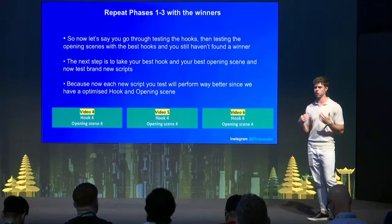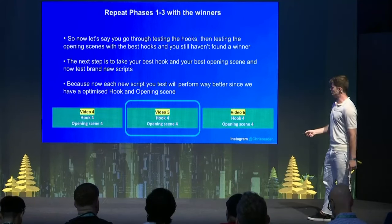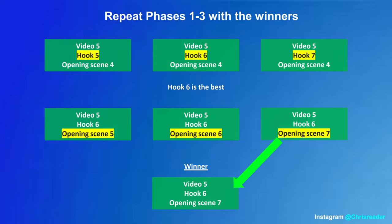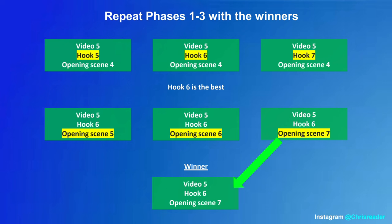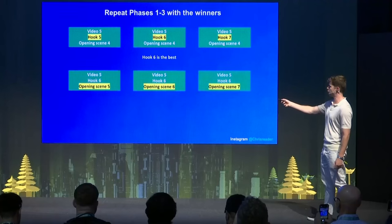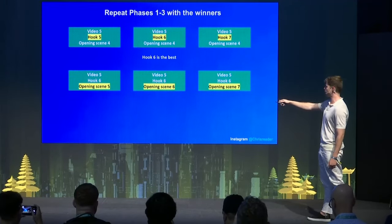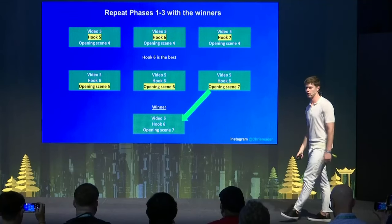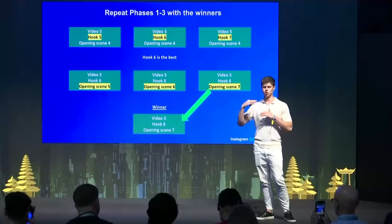Let's say video five, hook four, and opening scene four is performing the best — you just repeat the phases. Take video five and test hooks five, six, and seven, find which hook performs best, then do the same with opening scenes five, six, and seven. Once you've done this, you find the winner and scale it up. By doing this process you can just repeat it every single time — it's basically a conveyor belt. If you keep following this, every single ad you launch and evolve is just going to keep getting better and better until you find a winner.